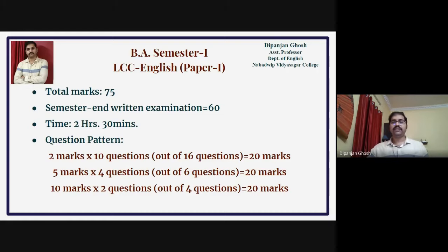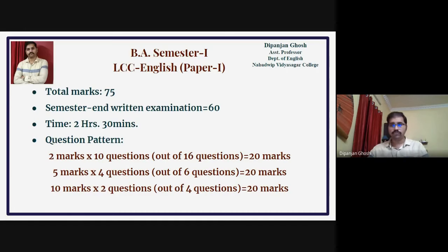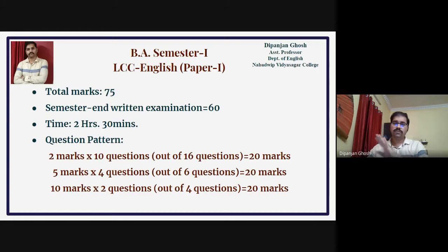The second part is the medium-length answers. Out of 6 questions, you have to answer any 4. Each carries 5 marks, so 5 into 4 equals 20 marks.